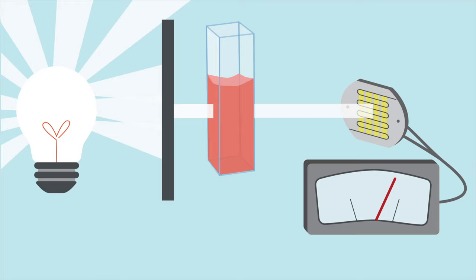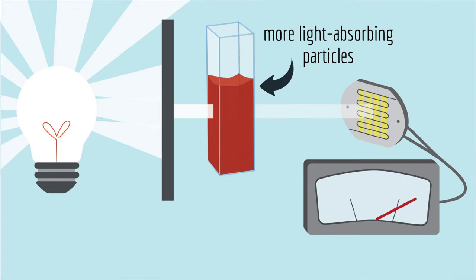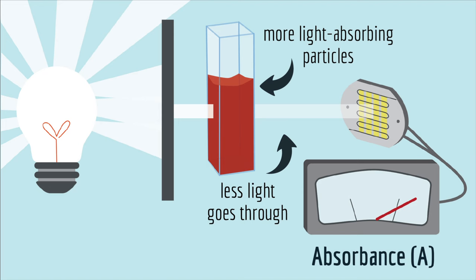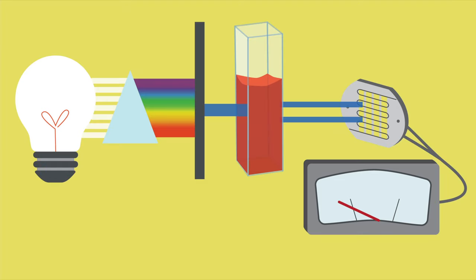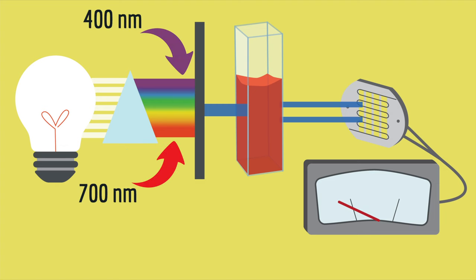Spectrophotometers do a similar thing. They shine light through a sample and measure how much light goes through. When a sample has more light-absorbing particles, less light goes through, which the spectrophotometer reads out as absorbance. There's one thing that makes a spectrophotometer a little more complicated than just looking through a glass of Kool-Aid: spectrophotometers don't use plain old light, they use specific wavelengths. White light is composed of all the colors of the rainbow, which can be separated by a prism. Each color is a specific wavelength of light. By using specific wavelengths, the spectrophotometer is more accurate when measuring the absorbance of a sample.